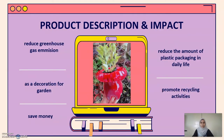Product description and impact. This product gives many impacts to the surrounding. This product can reduce greenhouse gas emissions, and it can be used as a decoration for the garden. This flower pot saves your money instead of buying a new pot. Moreover, this flower pot can reduce the amount of plastic packaging in our daily life and also promotes recycling activities.